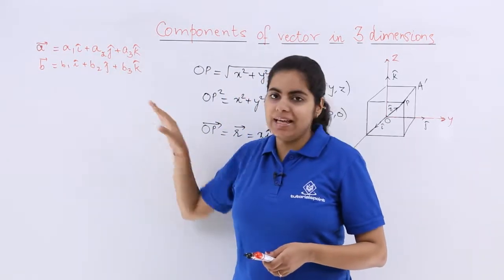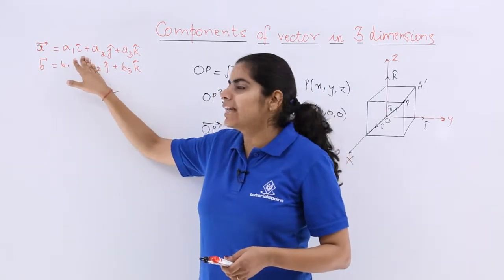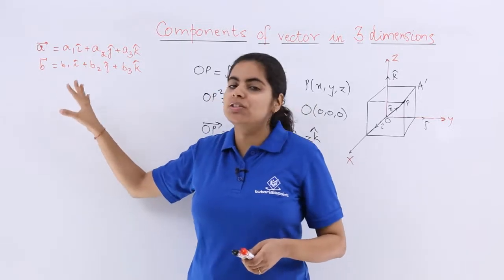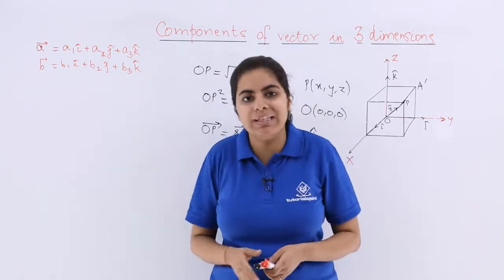I have two vectors a and b. Vector a is a1 i cap plus a2 j cap plus a3 k cap, and b is b1 i cap plus b2 j cap plus b3 k cap.